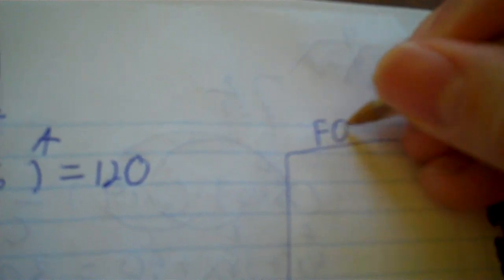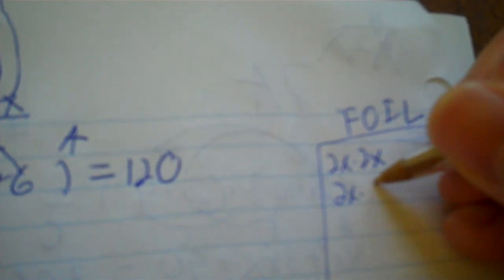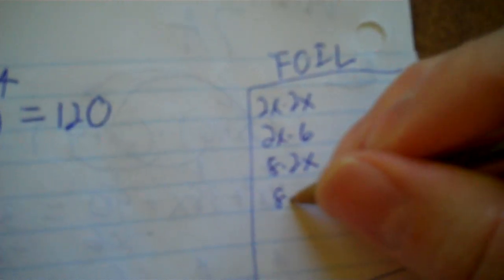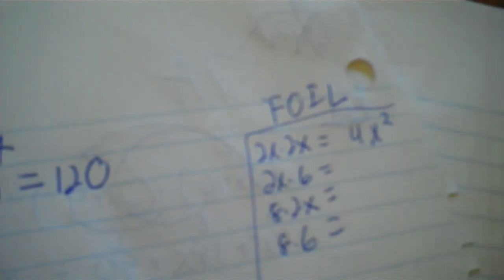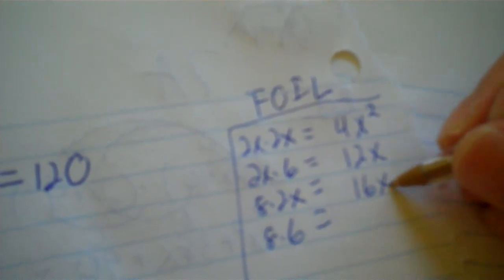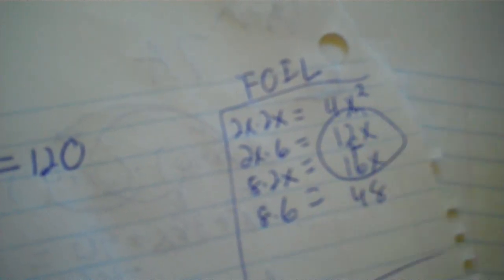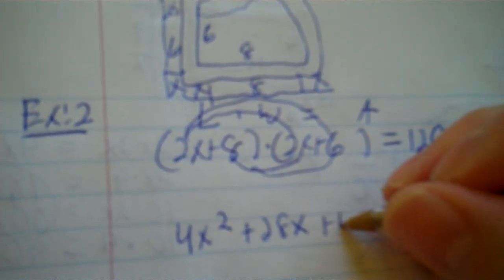Now I need to multiply this 2-by-2. This is known as the FOIL method — First, Outer, Inner, Last. So first I take 2x times 2x, then 2x times 6, then 8 times 2x, and 8 times 6. It's going to be the same thing as the last problem: 4x squared, 12x, 16x, and 48. Remember, you combine the two middle terms because they both have x's. So we have 4x squared, then 12 plus 16 is 28x, plus 48, equals 120.